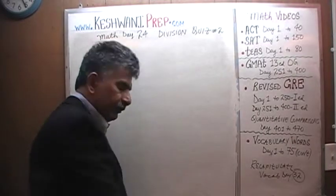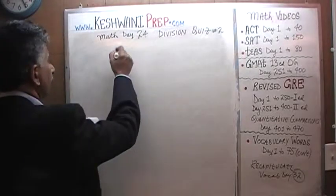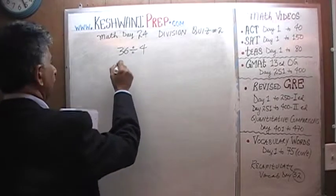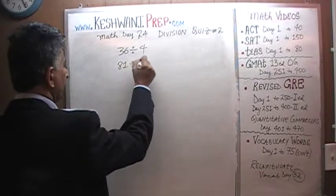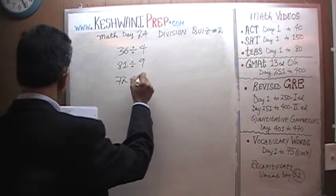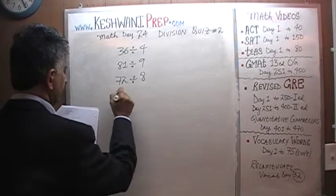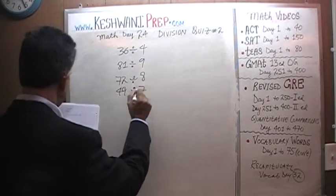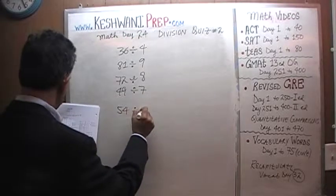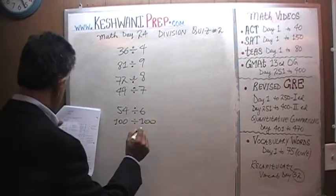Do the problems as soon as I finish writing them on the blackboard. Do them yourselves. Here we go. 36 divided by 4. 81 divided by 9. 72 divided by 8. 49 divided by 7. 54 divided by 6. 100 divided by 10.